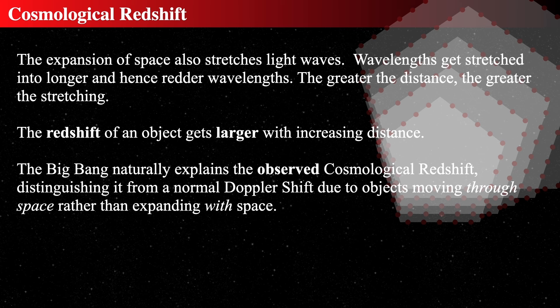The cosmological redshift is really important: space stretches light waves and the wavelengths get longer and therefore redder, because light has a length associated with it. As the universe stretches, that gets stretched with time. The redshift of an object gets larger with increasing distance. The Big Bang naturally explains this cosmological redshift and distinguishes it from normal Doppler shifts due to motion.